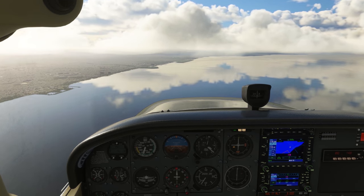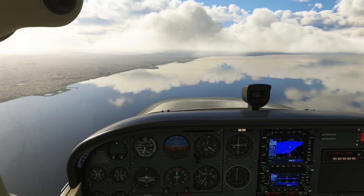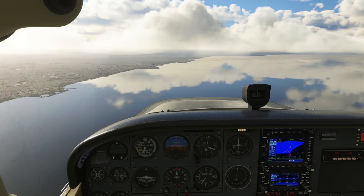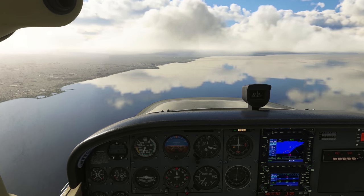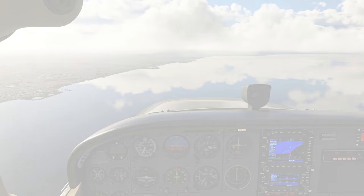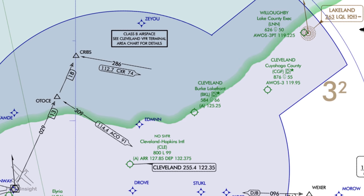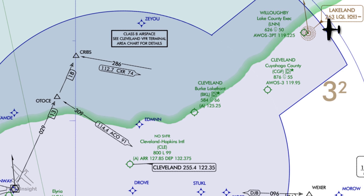Here we are descending into Cleveland bound for Hopkins International, the big Bravo airport. The clouds are a bit low, but it's a VFR day with good visibility. When we began our descent into the area from the east with our destination to the southwest, we were initially on a heading of 270 when ATC gave us the following instruction.